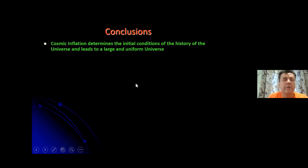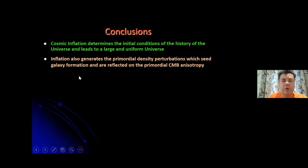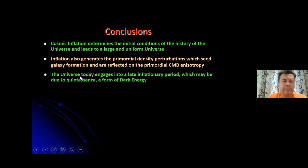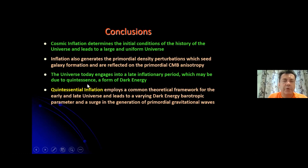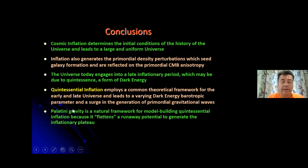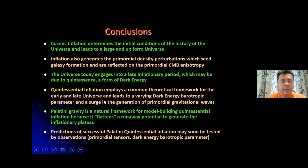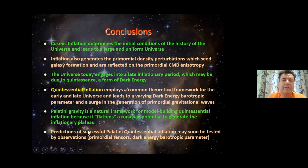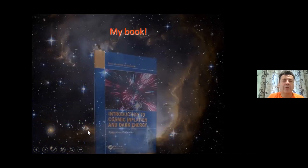To conclude: cosmic inflation determines the initial conditions of the history of the universe and leads to a large and uniform universe. It also generates the primordial density perturbations that seed galaxy formation and are reflected in the primordial cosmic microwave background. The universe today is undergoing a late inflationary period, which may be due to quintessence — a form of dark energy. Quintessential inflation employs a common theoretical framework for the early and late universe, leads to a varying dark energy barotropic parameter, and generates a surge in primordial gravitational waves. Palatini gravity is a natural framework for model-building quintessential inflation, as it flattens a runaway potential to generate the inflationary plateau. Thank you very much.